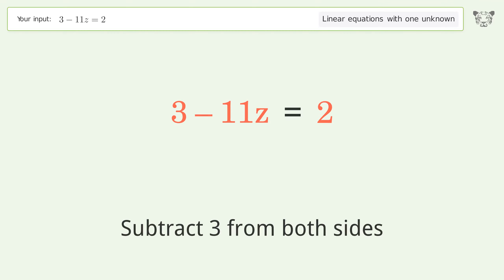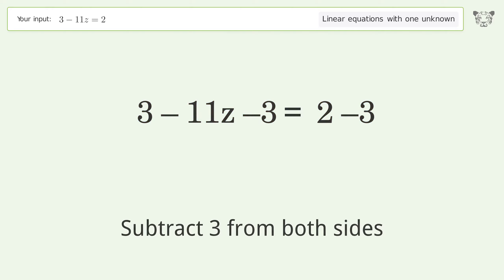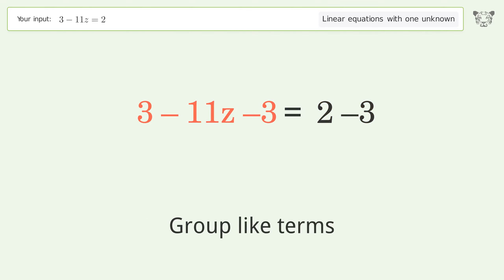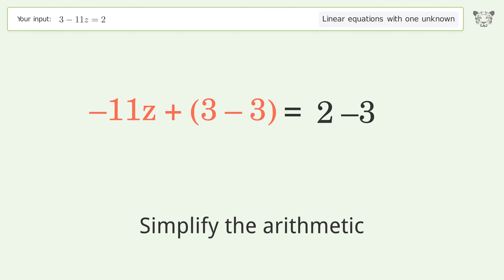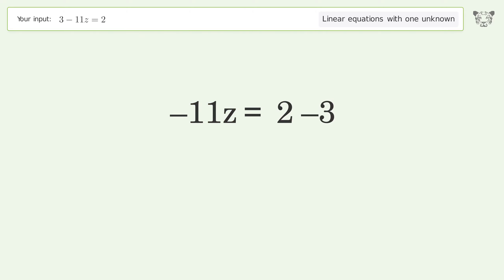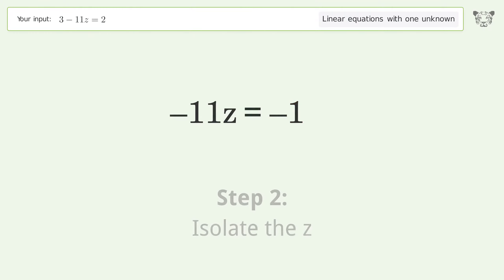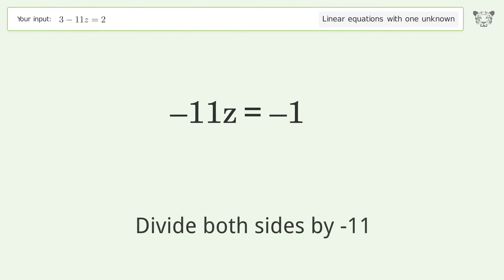Group like terms, then simplify the arithmetic. To isolate z, divide both sides by negative 11.